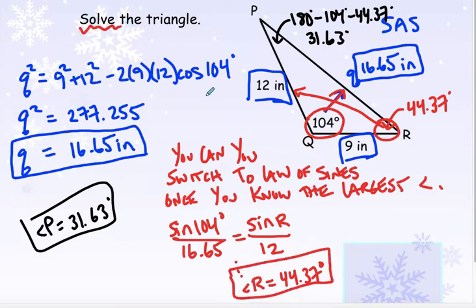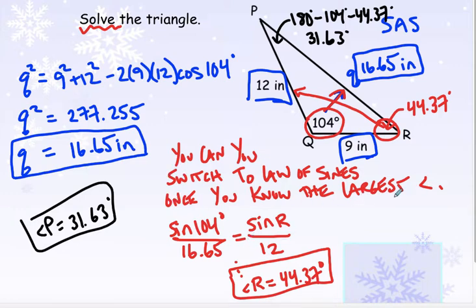Remember, whenever it says to solve a triangle, you find all the missing pieces. We had to start with law of cosines, but then we could switch to law of sines. Or you can continue with law of cosines as much as you want — there's no issues with it. Law of sines has issues because of the ambiguous case, which is why you need to know the largest angle before you switch to law of sines.